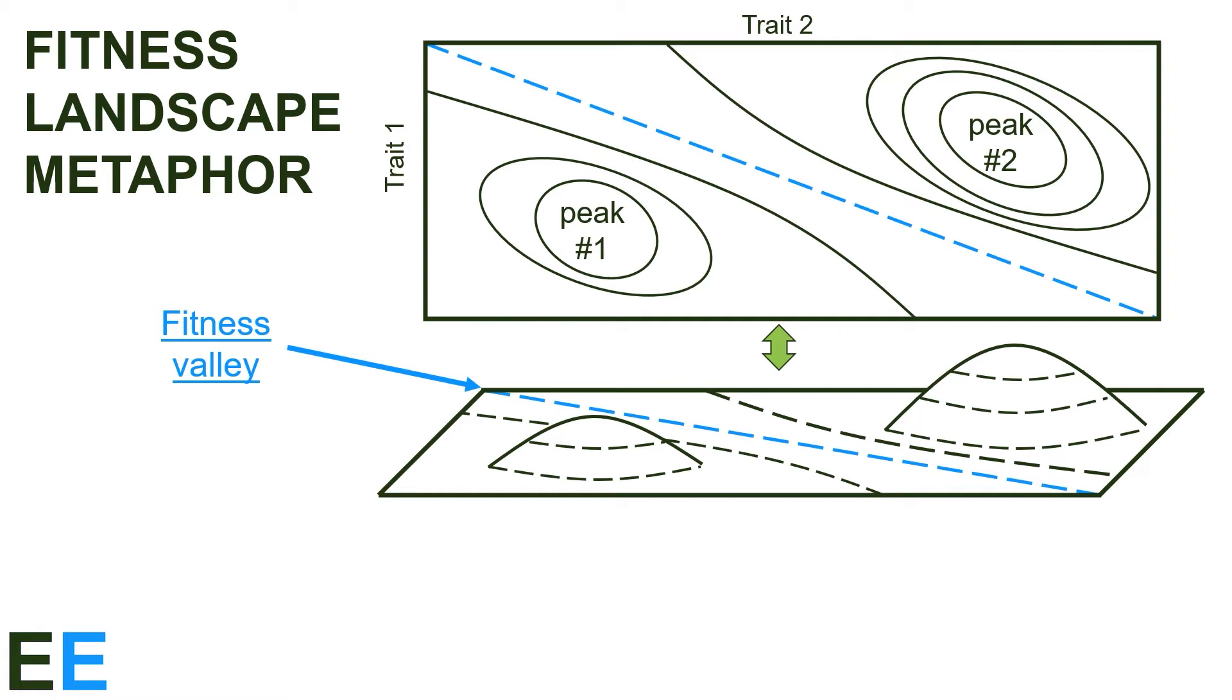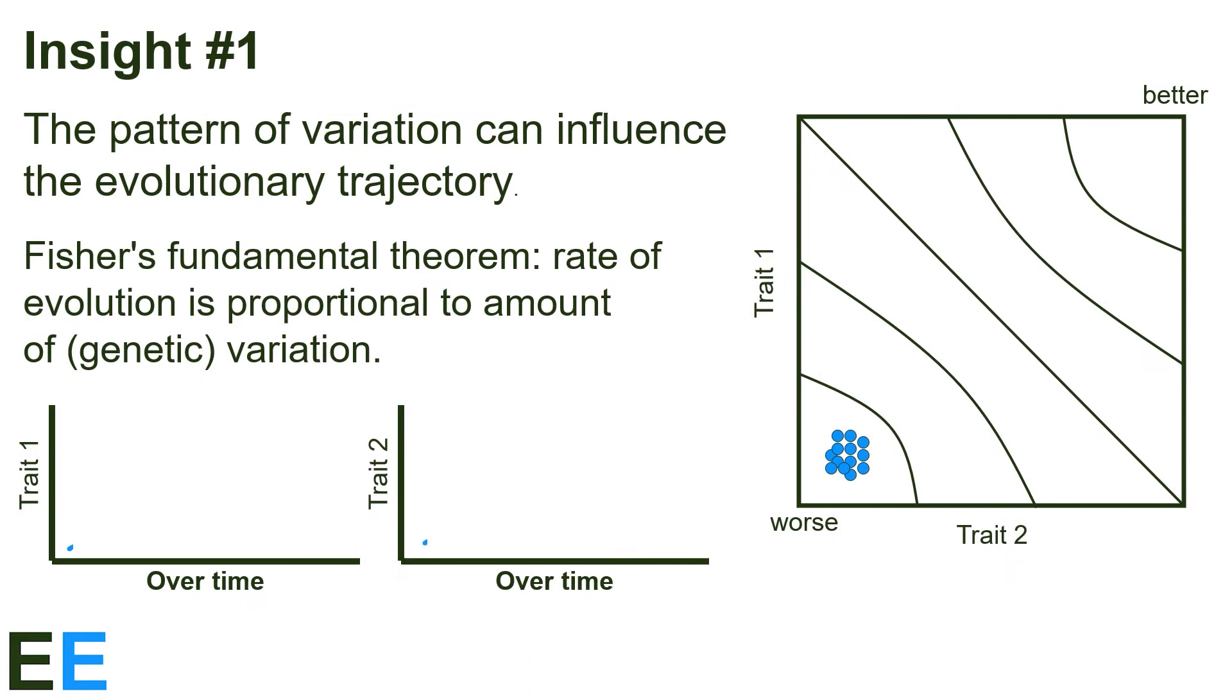Since fitness valleys represent lower fitness values than surrounding areas, we often talk about how populations are very unlikely to cross fitness valleys. If a population was on one peak, it wouldn't move to the other. We've covered the basics of fitness landscapes. Now let's take a look at what we can learn about evolution from them.